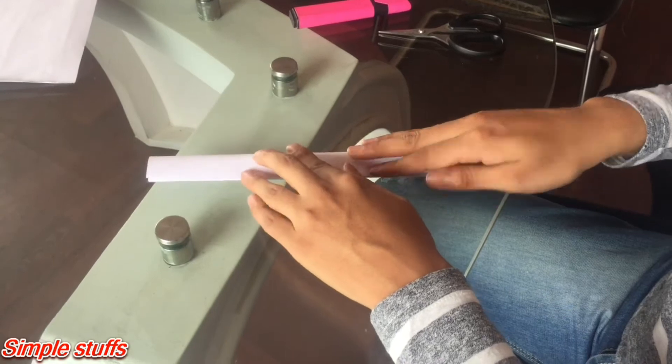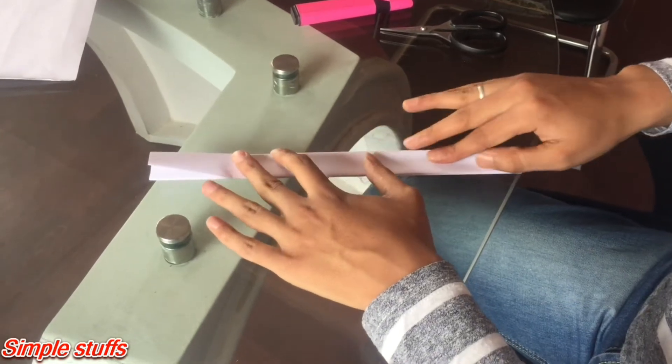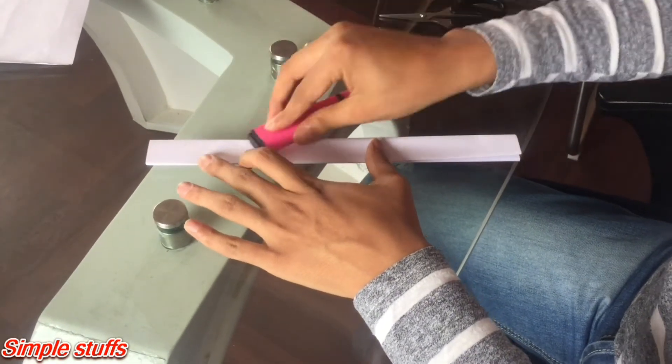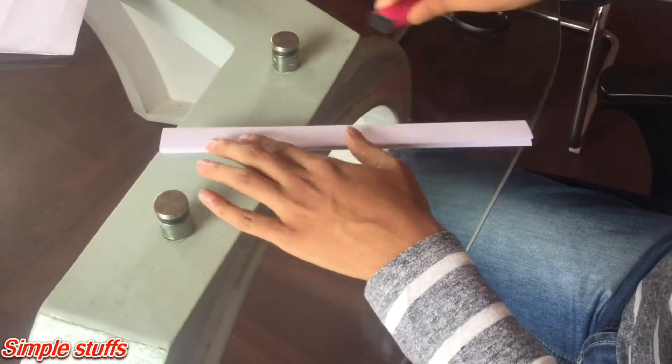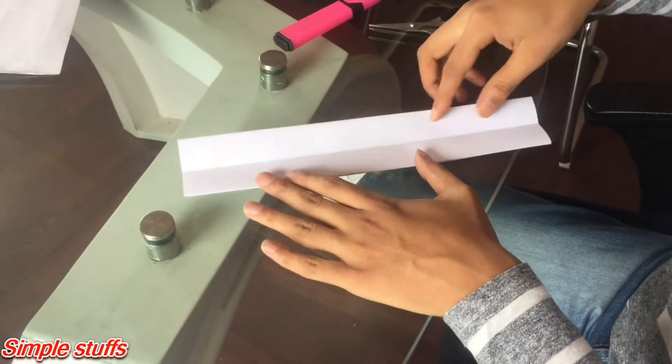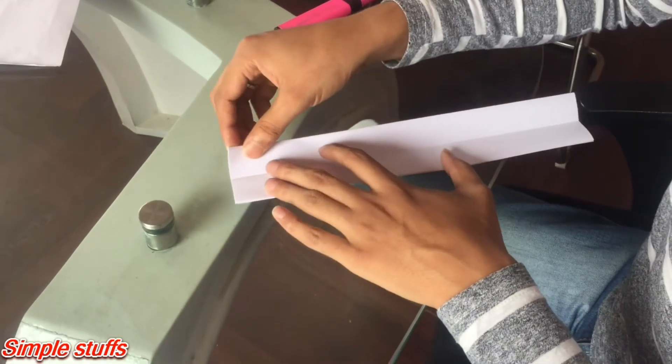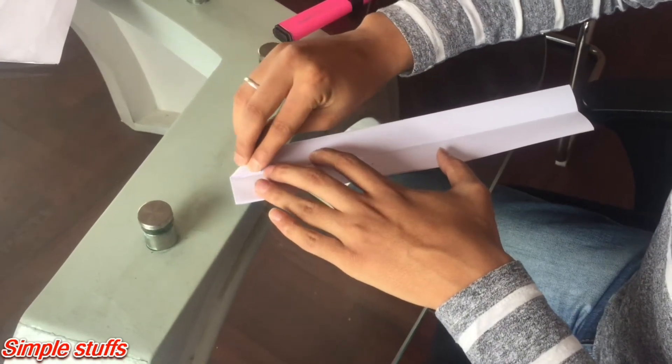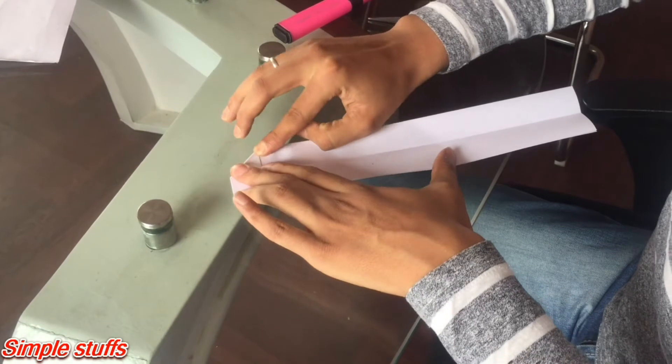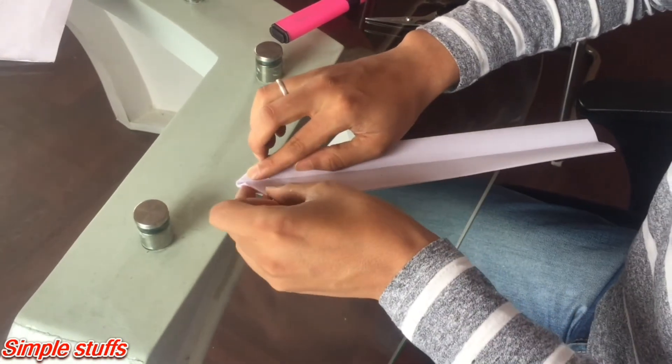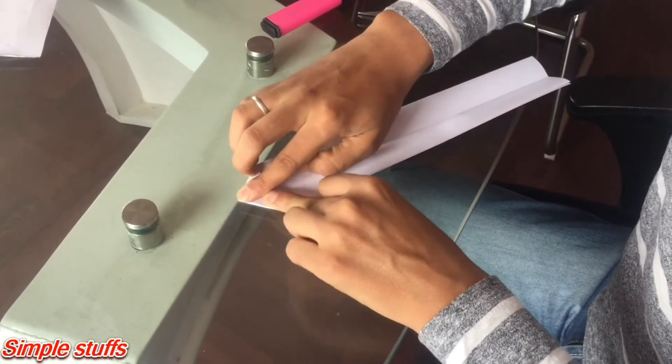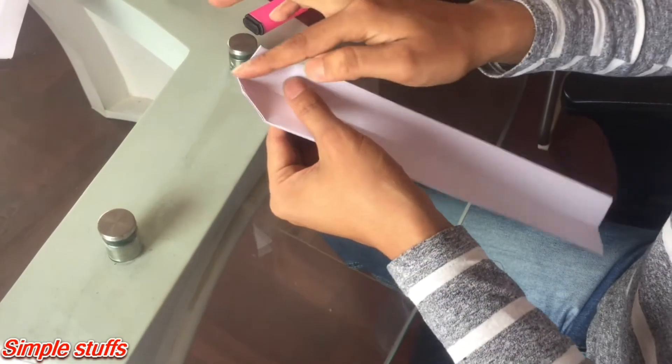Let's fold one more time and press it hardly. In the third one you can see a line between the paper, so let's fold up to that line on both sides and top of the paper so that we can see a mark.